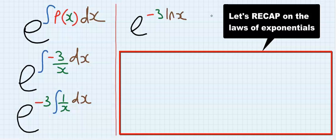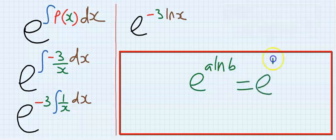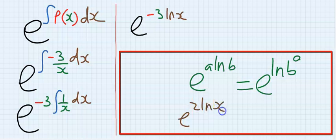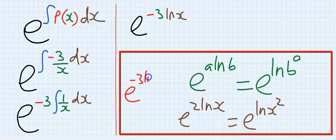Before I continue, I want you to remember that exponential a ln b is equal to exponential ln b to the power of a. That is, if I have exponential 2 ln x, is going to be exponential ln x squared. Similarly, if I have exponential minus 3 ln x, it's going to give me exponential ln x to the power of minus 3.